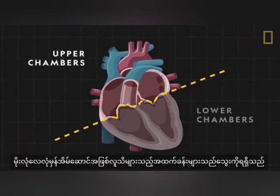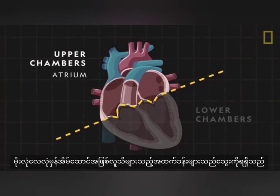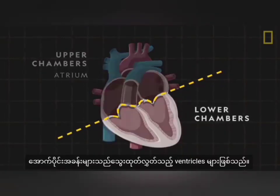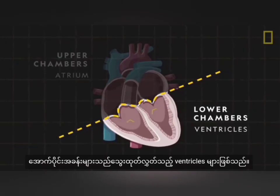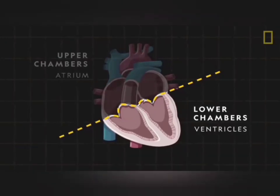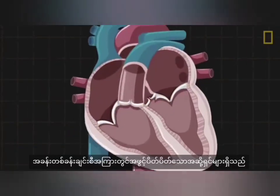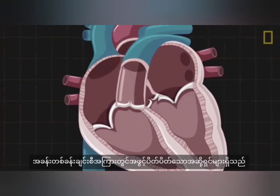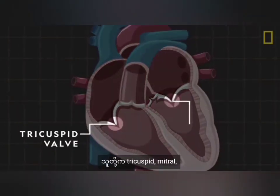The heart is divided into four chambers: two upper and two lower. The upper chambers, known as the atria, receive blood coming into the heart. The lower chambers are the ventricles, which pump blood out. Between each chamber are valves that open and close and help keep the blood moving.